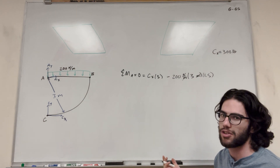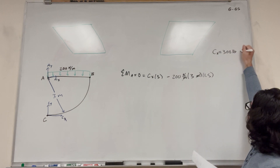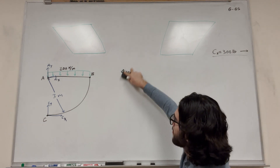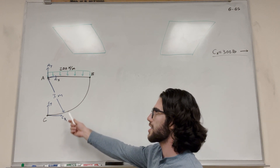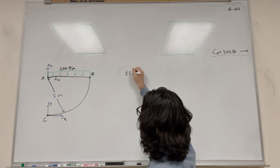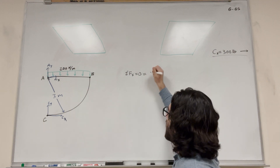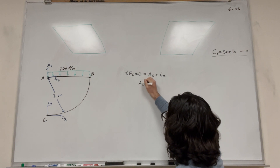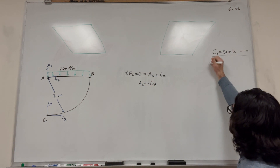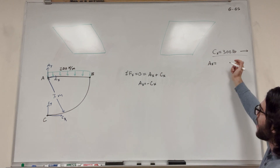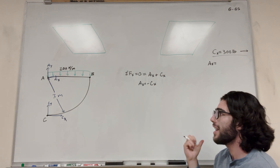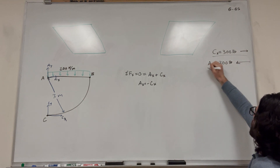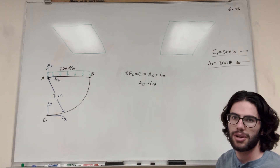We get a positive number, which means our assumption was correct — Cx points to the right at 300 newtons. Now we can do the sum of forces in the X direction, set equal to zero. We have Ax plus Cx equals zero, so Ax equals negative Cx, meaning Ax is 300 newtons but pointing to the left. So we drew that force pointing diagram wrong initially — Ax actually points to the left. Label it 300 newtons to the left, or negative 300 if you're inputting it into a computer.